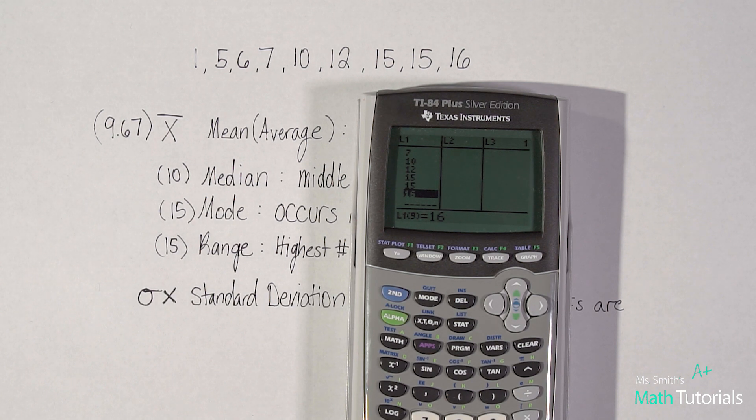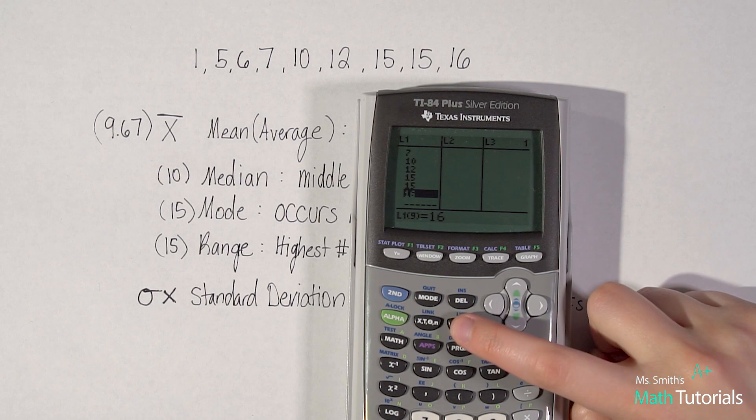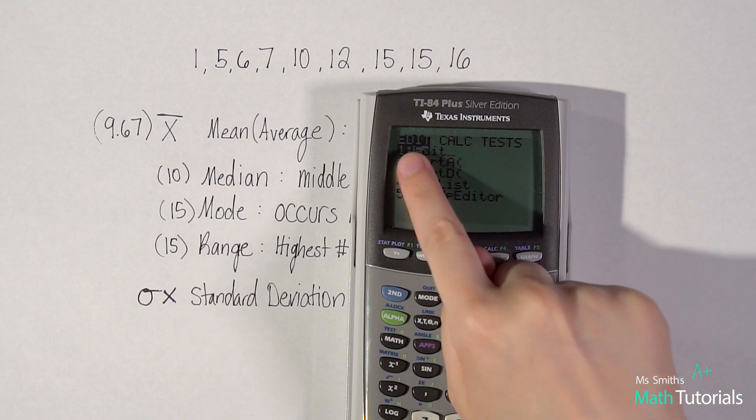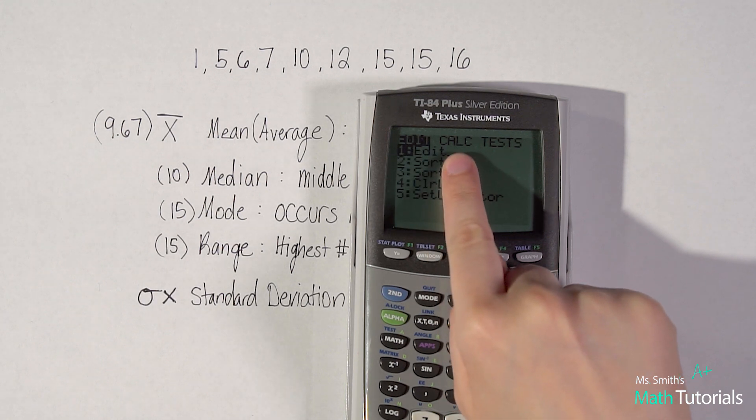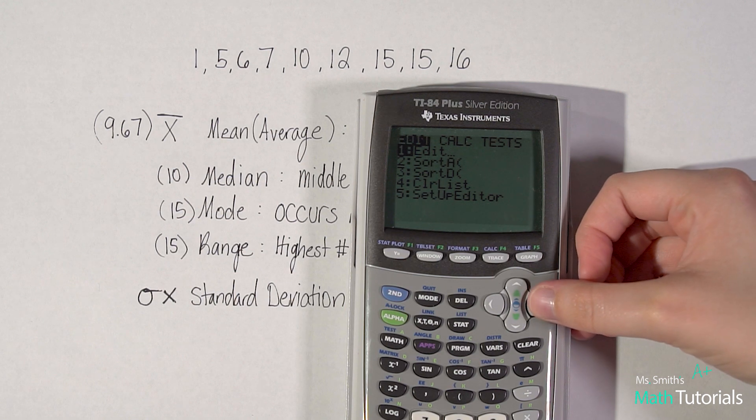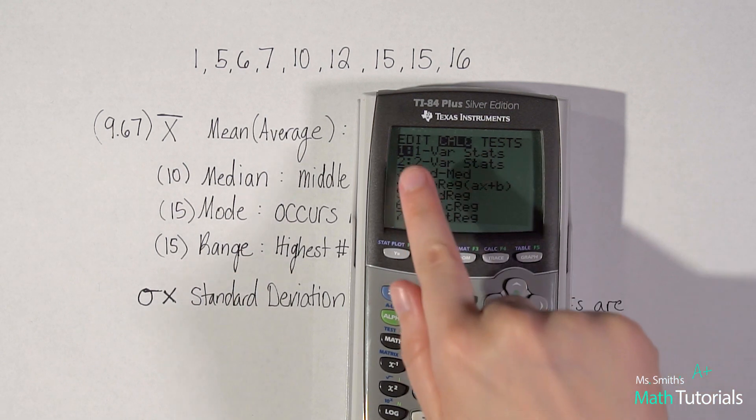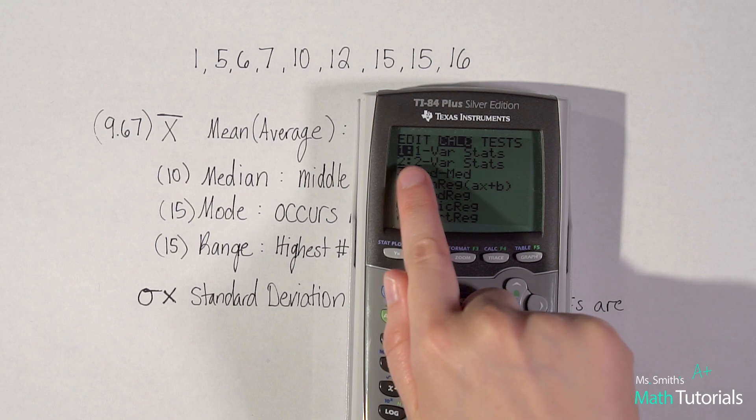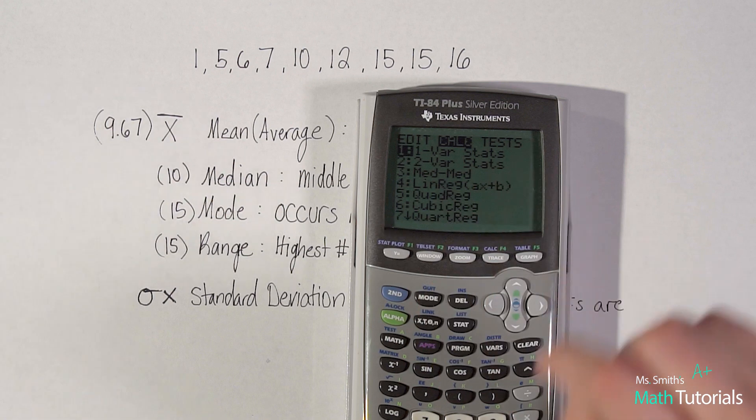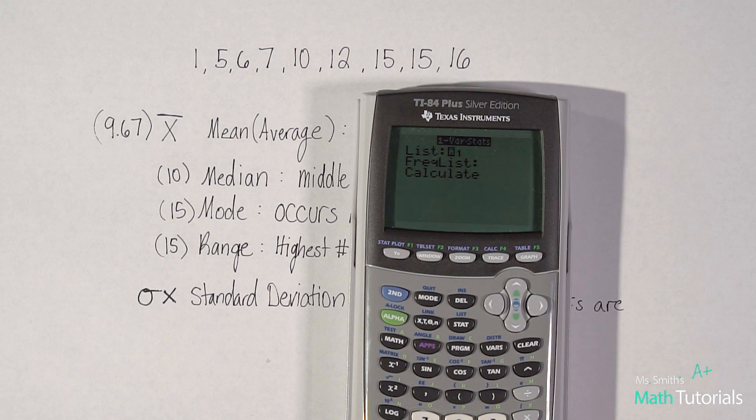Okay, so once you've got that in, we're going to hit the stat button again. And we're going to move to the right now, we're in the edit function, we want to move over to calc. So you hit, I think I said left, but I meant to say right. So you hit the right button once. And now we're in calc. Okay, you'll see this first option says one stats, very stats, that's what we want. Okay, so just hit enter. Now it'll bring you to this page, just hit, keep hitting enter until it takes you to the next page. So we'll hit enter one, two, three times.